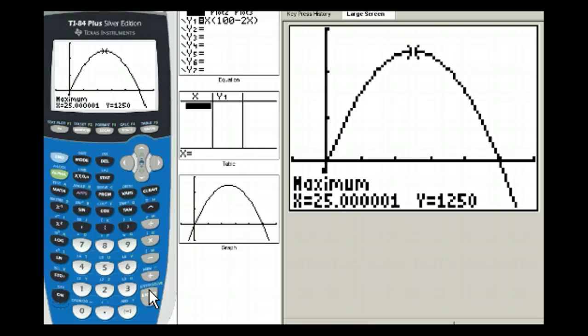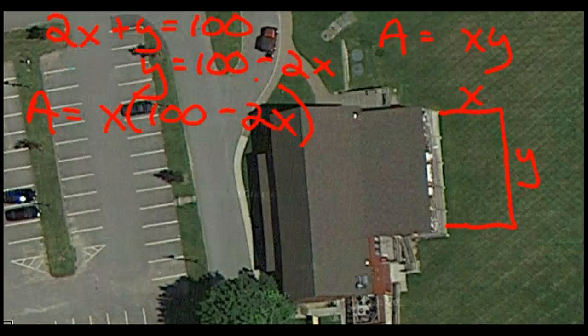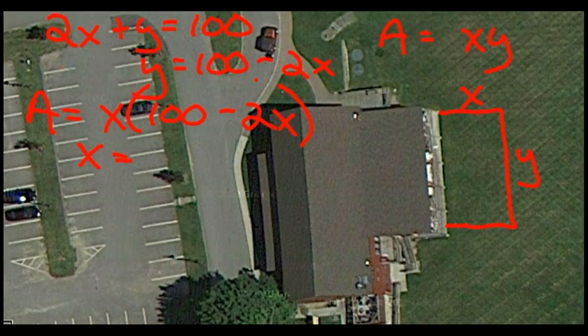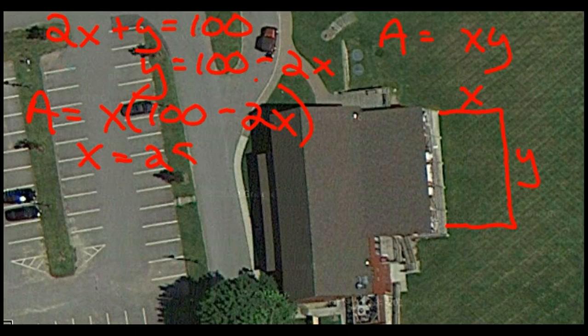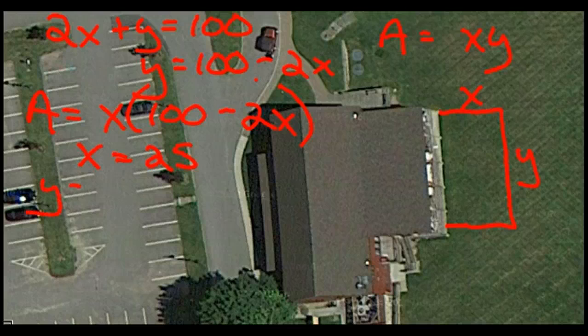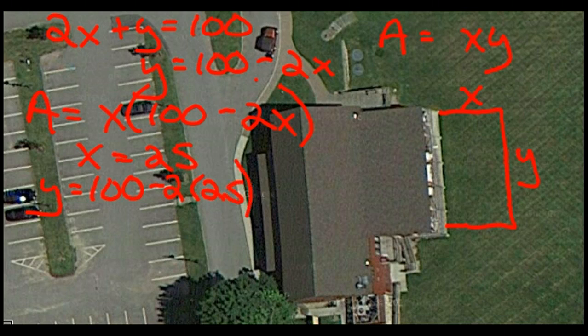Now be careful, that's not the same y that we had before. Let's go back. Just remember that. The x equals 25, and the area equals 1,250. So from what we did on the calculator, x equals 25. We can take this value and plug it in to find y. y equals 100 minus 2 times 25, 100 minus 50, or 50.